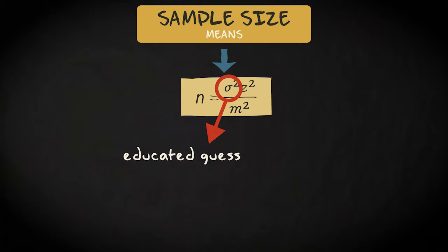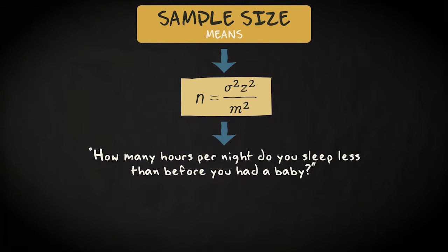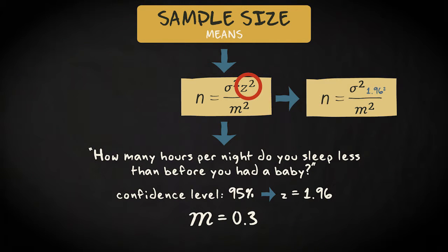Let me show you how you could do this in practice. I'm going to investigate how much sleeping hours new parents in Amsterdam lose after the birth of their first child. Now imagine that I want the confidence level to be 95%. The z-score corresponding to this confidence level is 1.96. I also don't want the margin of error to be wider than 0.3 hours. m equals 0.3. We can complete this part of the formula now, and also this part of the formula.